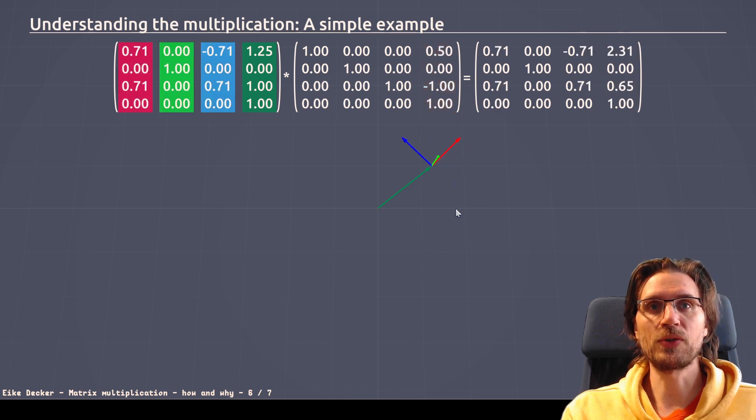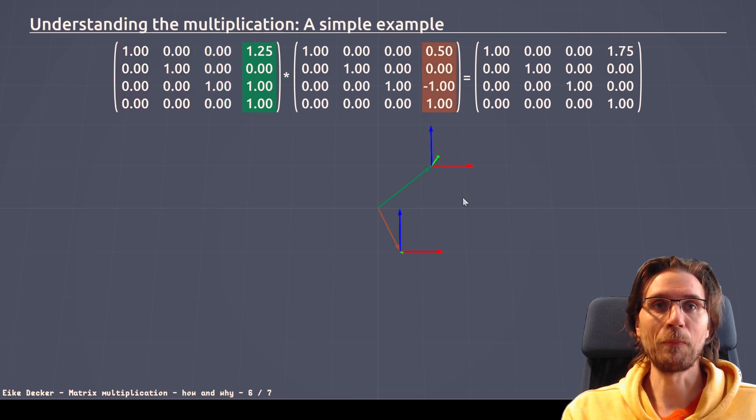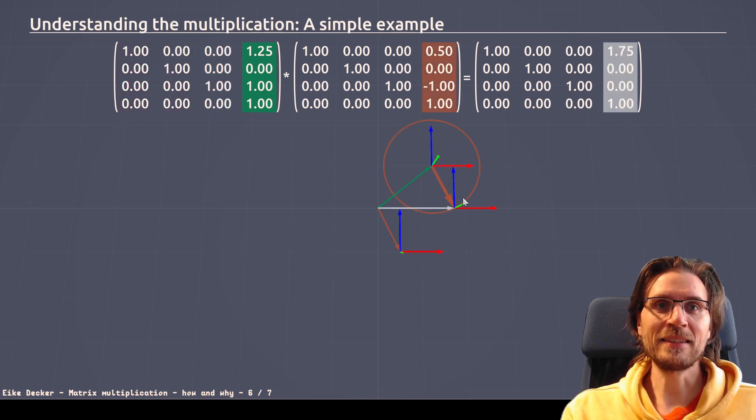However, this changes when we introduce a rotation. So, just as a reminder, the red arrow represents the first column, the green arrow the second, and the blue one the third one.